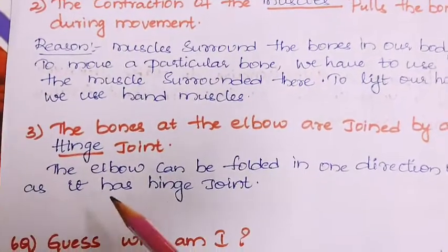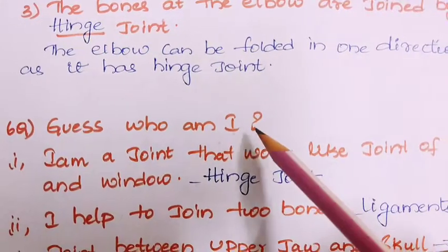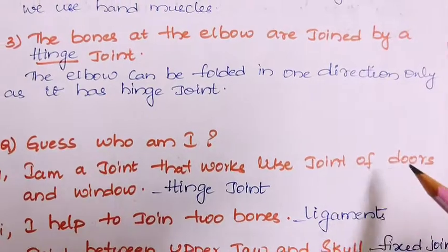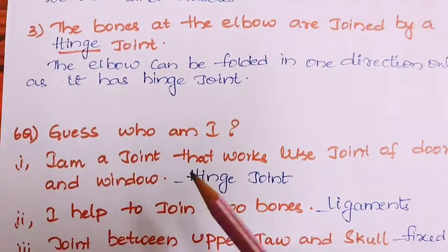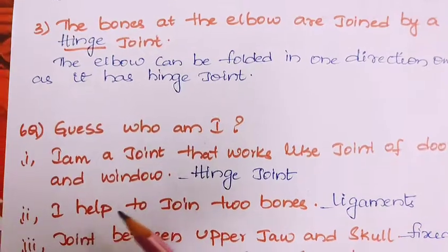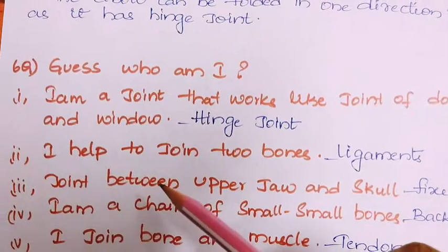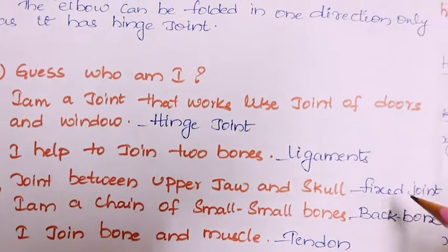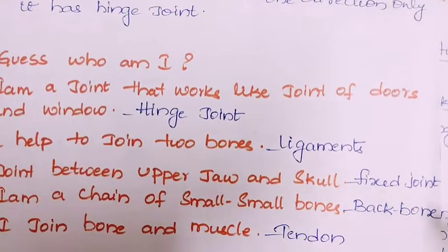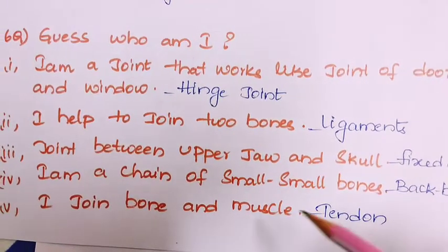Sixth question — guess who am I: I am a joint that works like a door and window joint — it is a hinge joint. Two bones can be joined with the help of ligaments. The joint between the upper skull is a fixed joint. I am a chain of small small bones — it is a backbone. Bone and muscle can be joined with the help of a tendon.